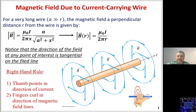Good morning, everyone. In today's lecture, we will continue what we have started in the last lecture. If you recall, in the last lecture we derived the magnetic field induced by a finite wire that has a length of 2a. Today, we will extend this and look at an infinite wire.